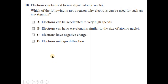Question 10: which of the following is NOT a reason why electrons can be used to investigate atomic nuclei? Electrons can be accelerated to very high speed — that is a valid reason. Electrons can have a wavelength similar to the size of atomic nuclei — also valid. Electrons have negative charge — this is NOT the reason, because the same investigation can be done with a positive charge. The answer is option C.